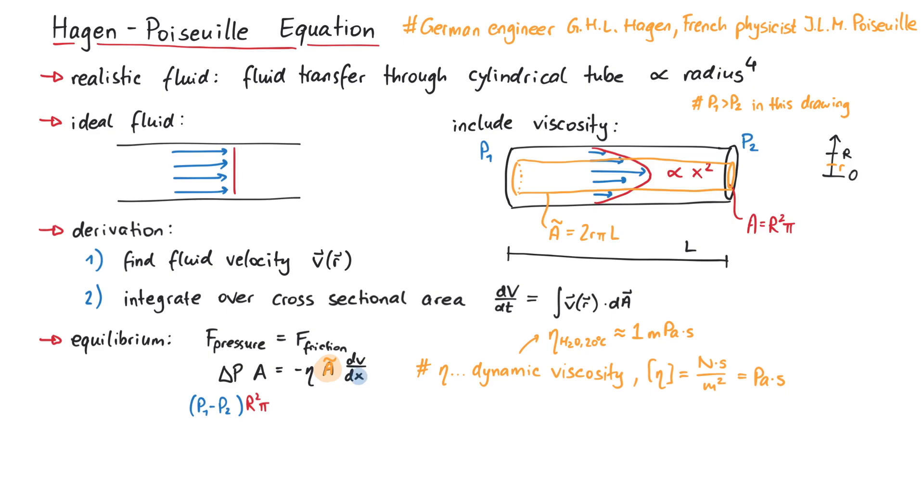Finally, x is a placeholder for the direction towards a streamline with a different velocity. In our case, this is the radial direction. Putting everything together, we get minus eta times the cylinder surface area 2r pi l times the derivative of velocity must be equal to p1 minus p2 times the cross-sectional area r squared pi.